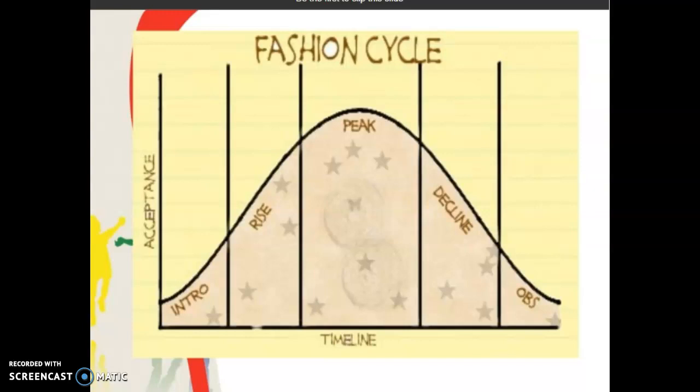The y-axis is a vertical line representing acceptance, and the x-axis refers to the timeline. So here, this is the introduction stage, this is the rising stage, this is the peak stage, this is the declining stage, and this is the rejection stage.